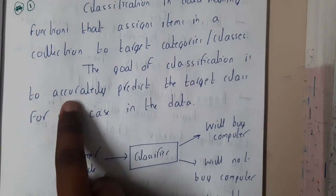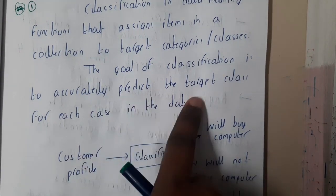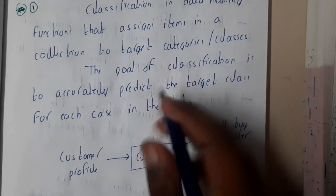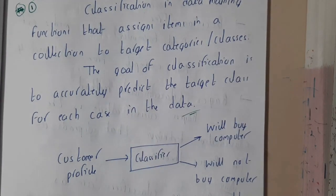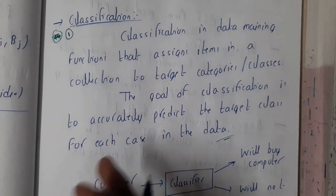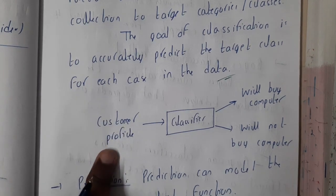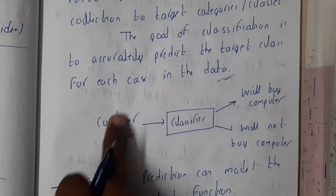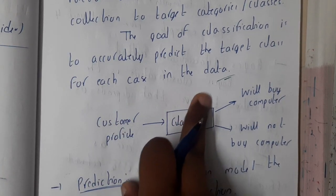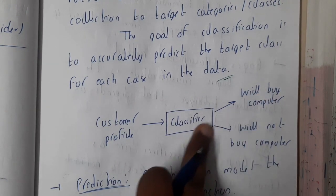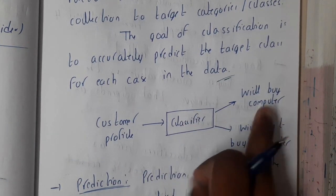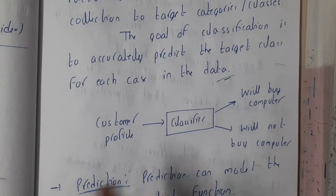The goal of classification is to accurately predict the target class for each case in the data. For example, customer profile: we pass it into the classifier and it will say whether he will buy a computer or he will not buy a computer. This is classification.